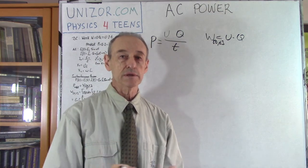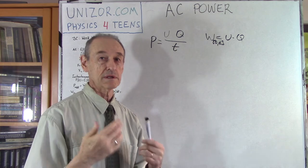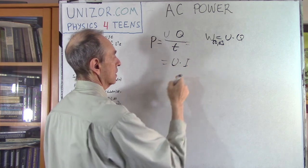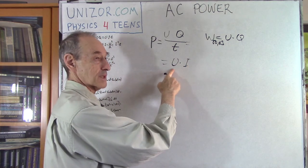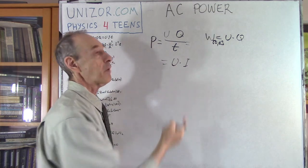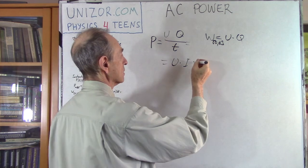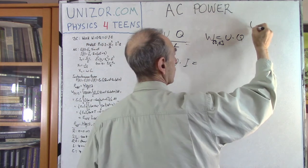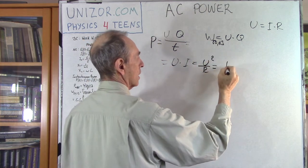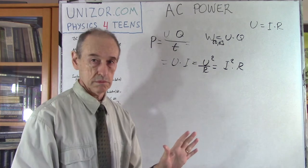In direct current, Q divided by T is constant — it's DC, it's constant — and it's usually called I. So power is equal to U times I: the voltage times the electric current. And incidentally, using Ohm's law, power is also equal to U squared divided by R, or I squared times R. This is what we know from direct current.